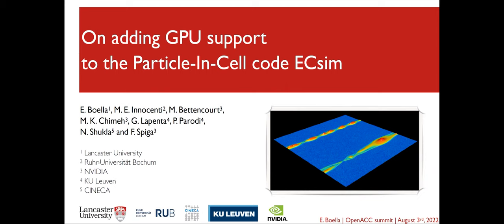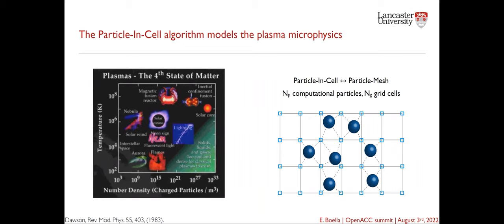I mentioned plasma, so what is plasma? Plasma is the fourth state of matter — basically an ionized gas. It exists in a wide range of density and temperature. For our research, we are mainly interested in space plasmas like the solar wind. These plasmas are peculiar: they have very low density and collisions among particles happen very rarely, so these plasmas are basically collisionless. This means that particles interact mainly through the long-range effect of the electromagnetic force.